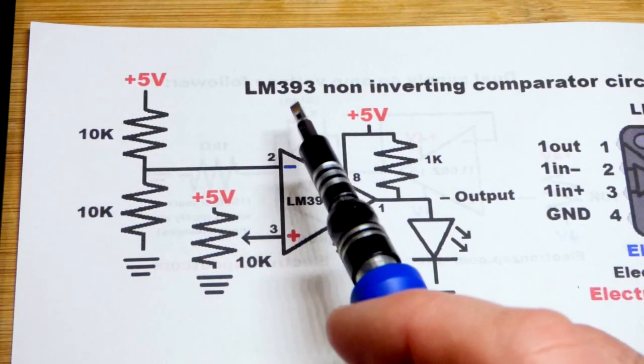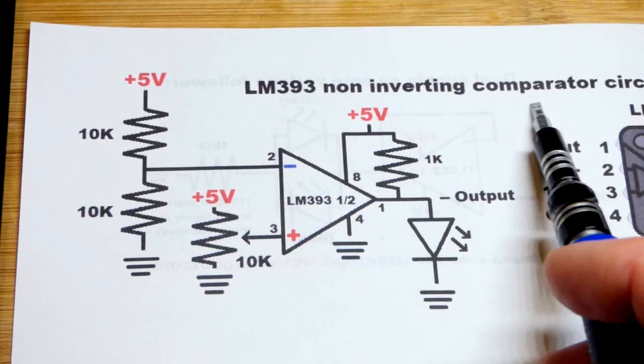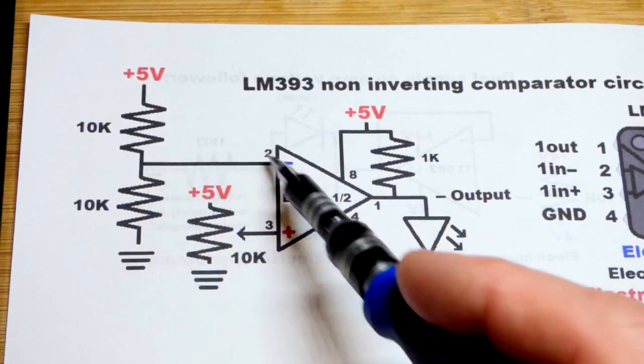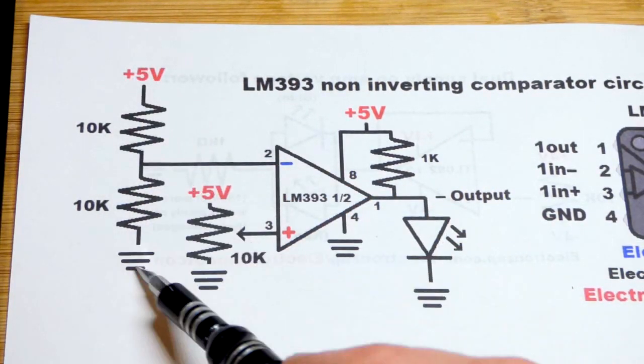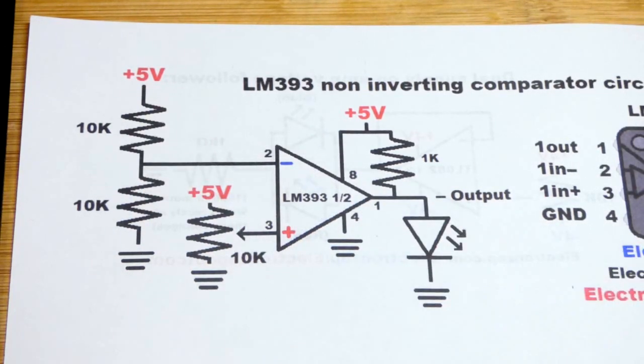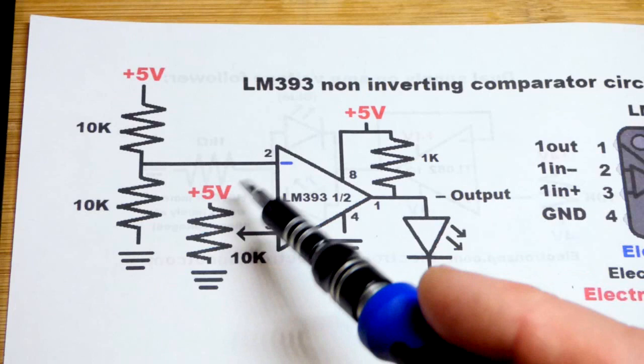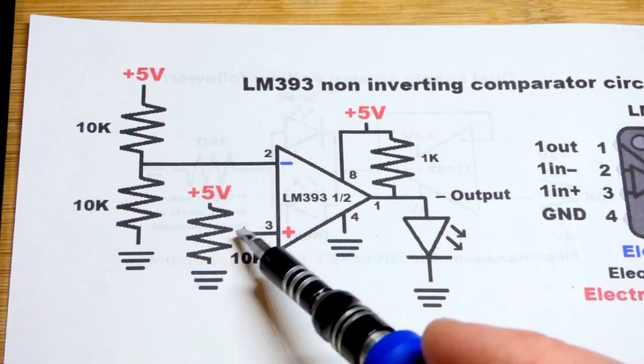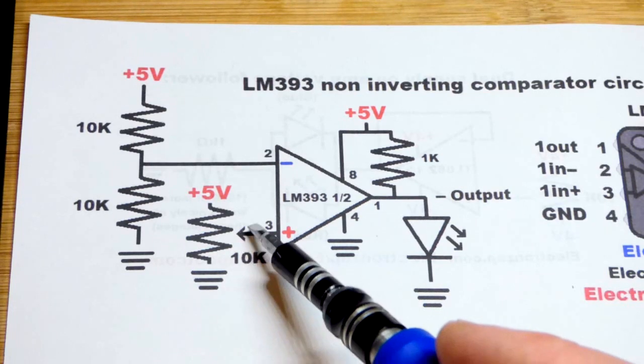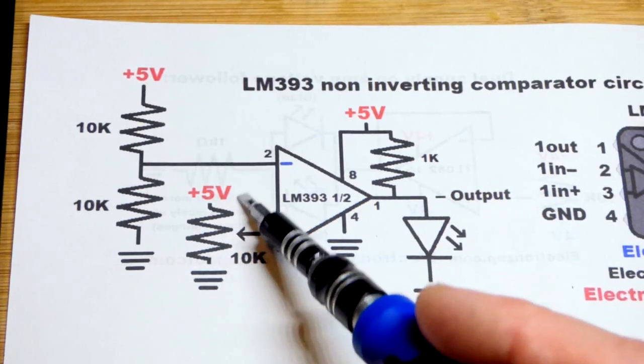In this video we're going to use the LM393 comparator as a non-inverting comparator. We're going to set the voltage to half of the supply voltage, 5 volts there, so it's going to be 2.5 volts to the inverting input. The non-inverting input is going to have a trim pot which can go up to 5 volts or down to 0 volts.